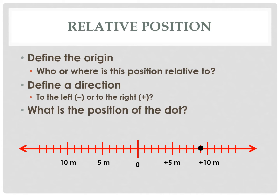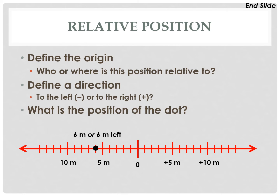So what position is this dot? We can see that it's at positive 9 meters. Positive means to the right, so it can also be said that it is at 9 meters to the right. This next dot is located at negative 6 meters, and since we know negative means left, we can also say it's 6 meters to the left.